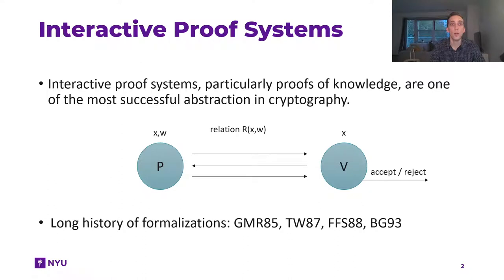Let me start by giving you a brief recap of interactive proof systems and proof of knowledge in particular. An interactive proof system is essentially a protocol between a prover P and a verifier V, where the prover wants to convince the verifier V of some fact. In the case of a proof of knowledge, this fact is that for a given relation R and statement X, the prover knows a witness W that satisfies the given relation.